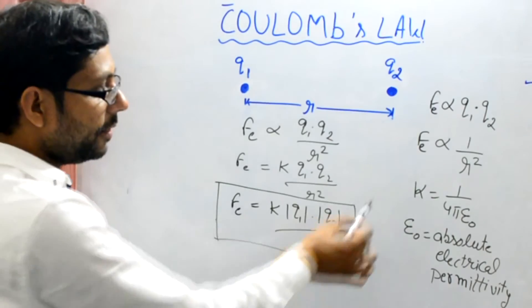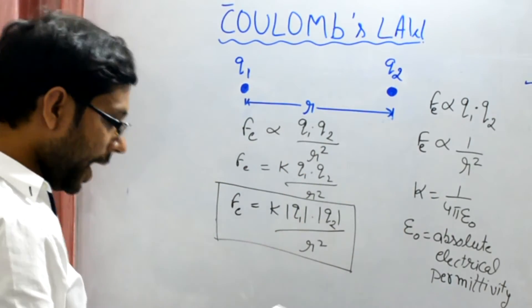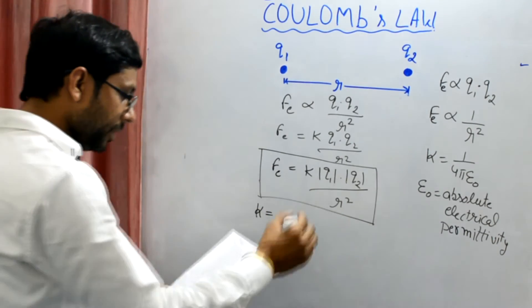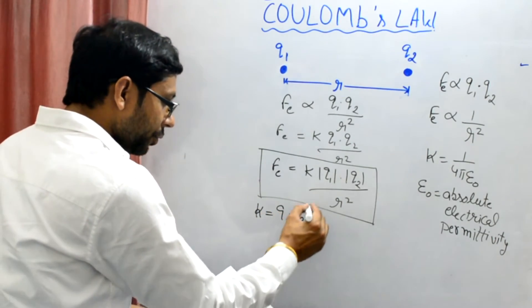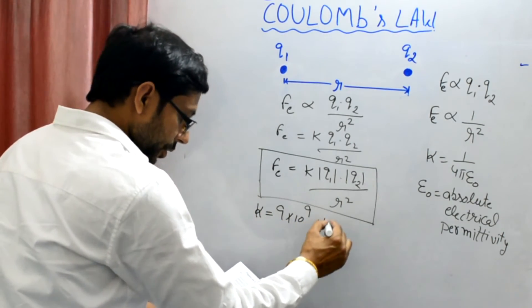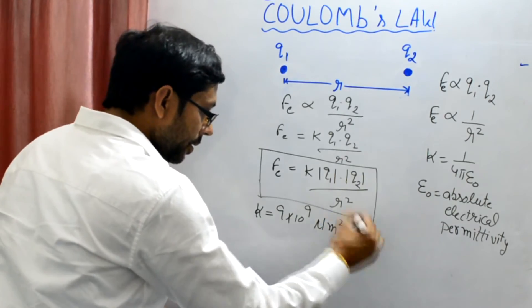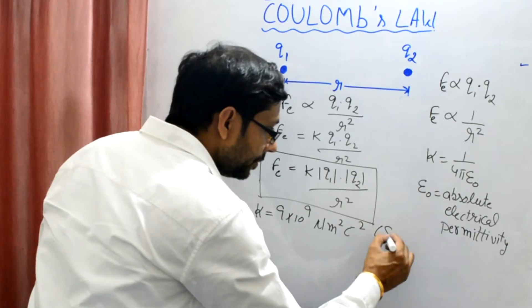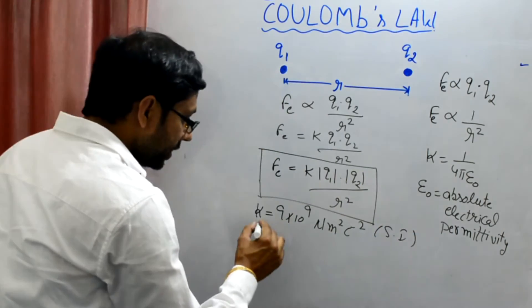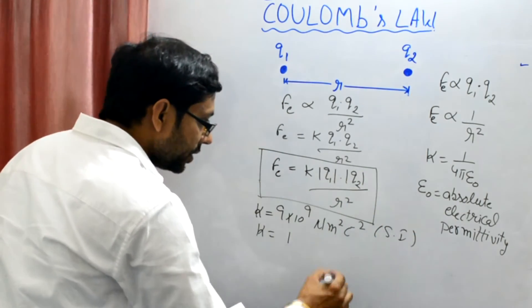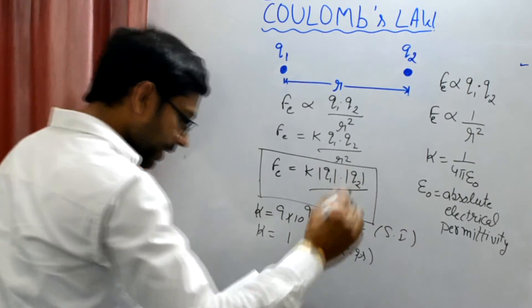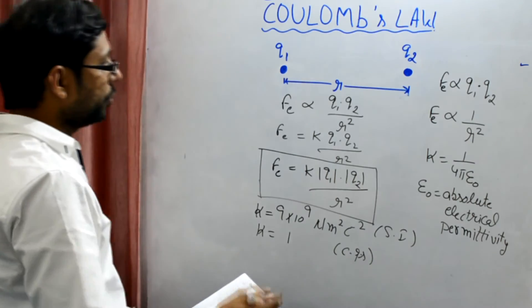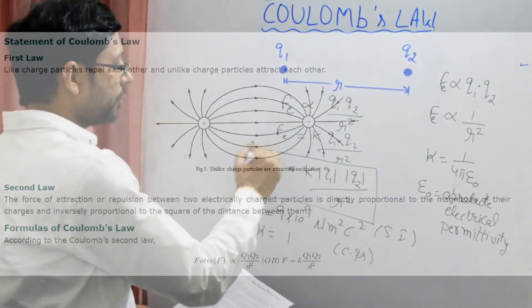So, let's study the constant. Value is already given here. And let me tell you that value of K is 9 into 10 raised to the power 9 newton meter square per coulomb square, and this is for SI system. And for CGS system, the value is 1. So, this is the formula for Coulomb's law.